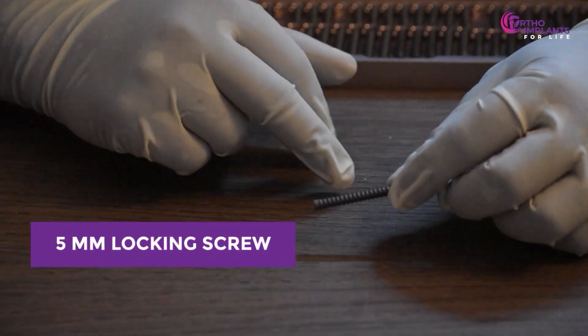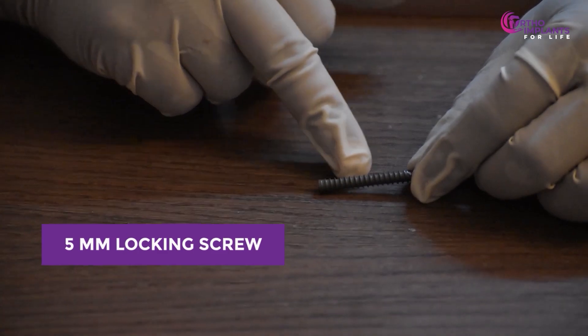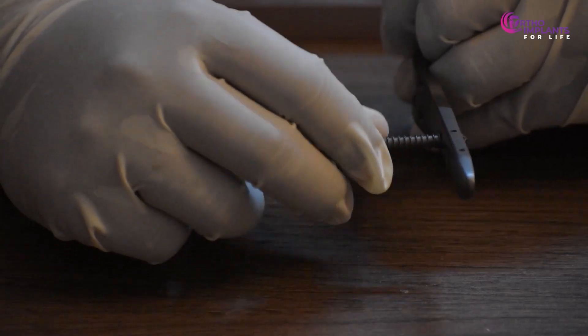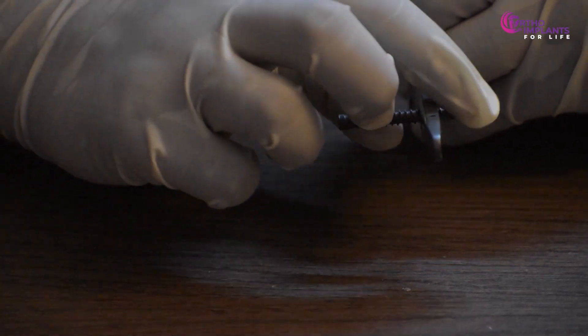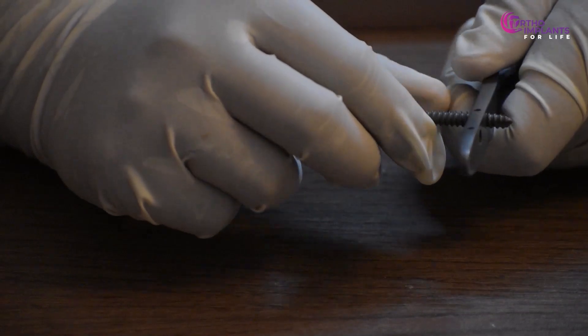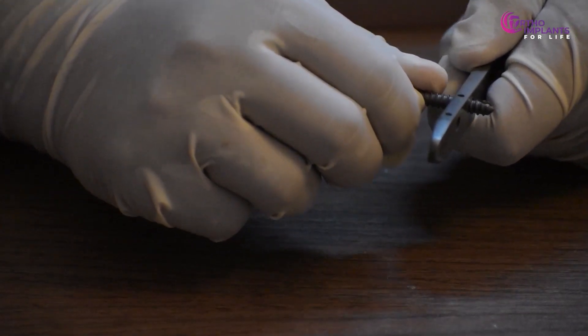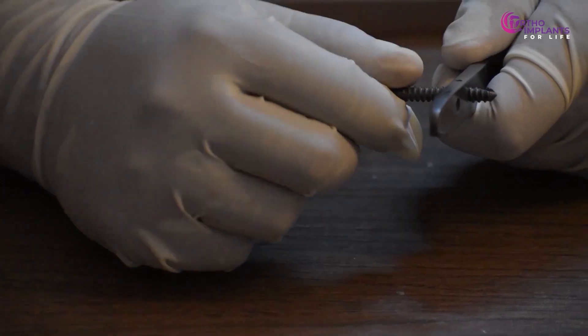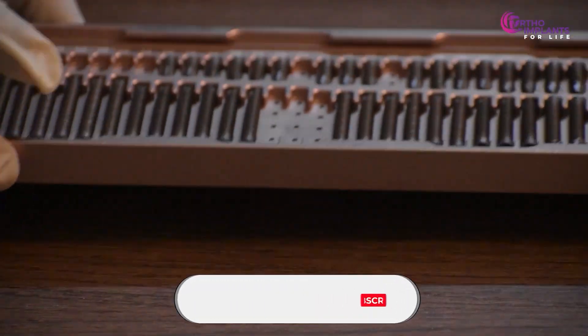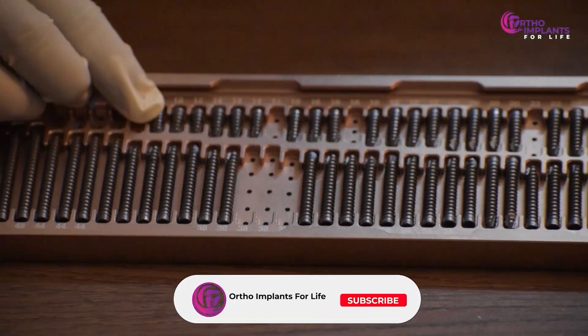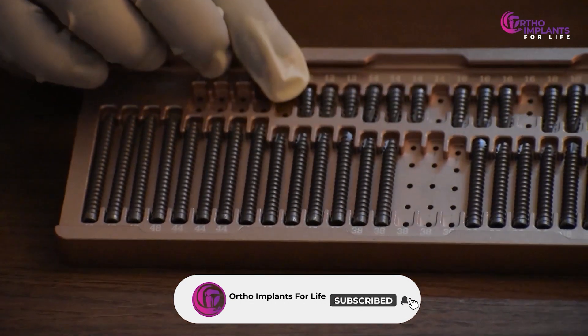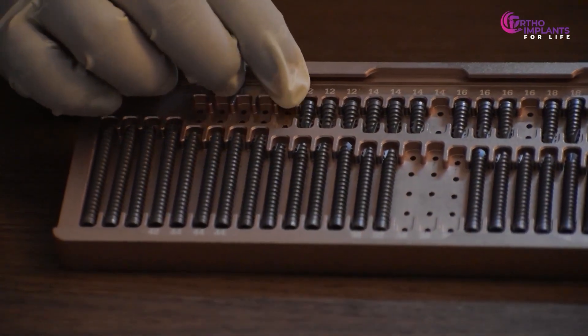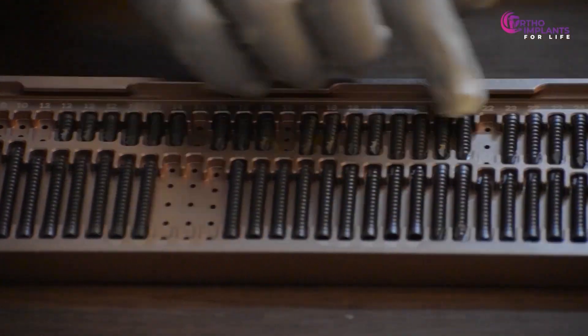This is the 5 mm locking screw for the periprosthetic plate. It's called a locking screw because, once it's inserted, it locks the plate because of these threads here. We don't have to even go all the way through with the screw to lock. As you can see, even if I am pulling the screw, it is stuck. These screws are specifically designed for the periprosthetic plate, with lengths ranging from 20 to 60 mm and a 5 mm diameter.